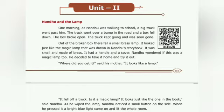One morning, as Nandu was walking to school, a big truck went past him. The truck went over a bump in the road and a box fell down. The box broke open. The truck kept going and was soon gone. Out of the broken box there fell a small brass lamp. It looked just like the magic lamp that was drawn in Nandu's storybook.